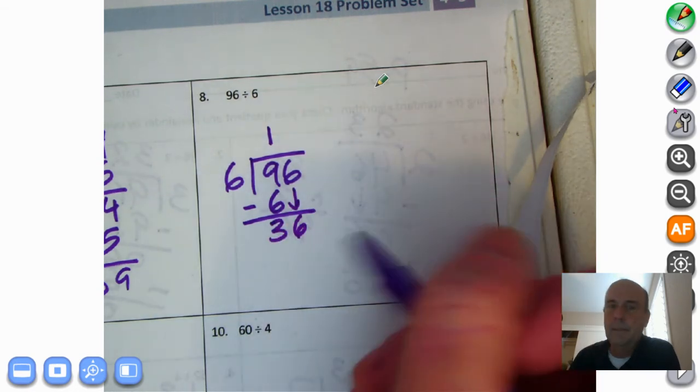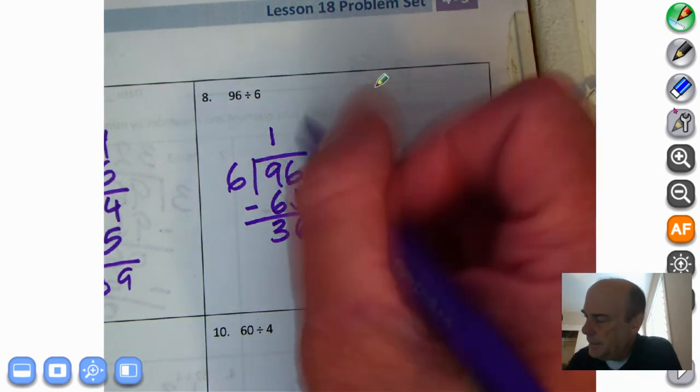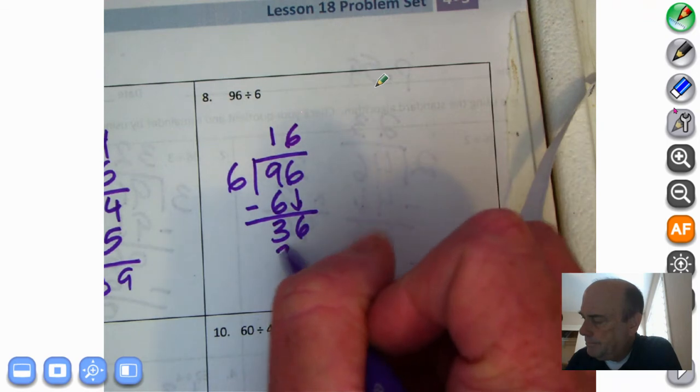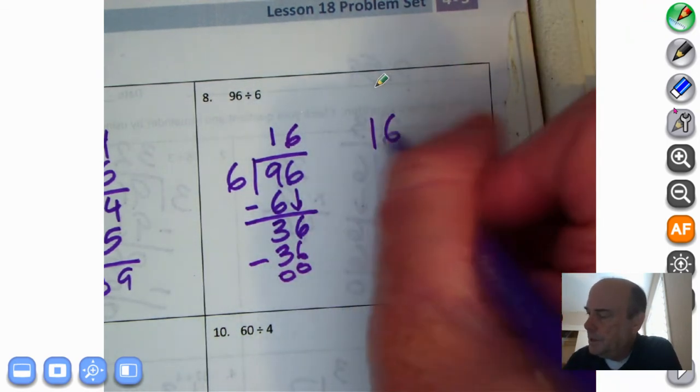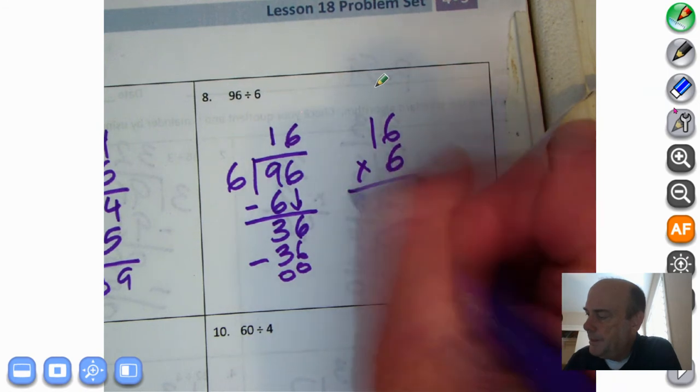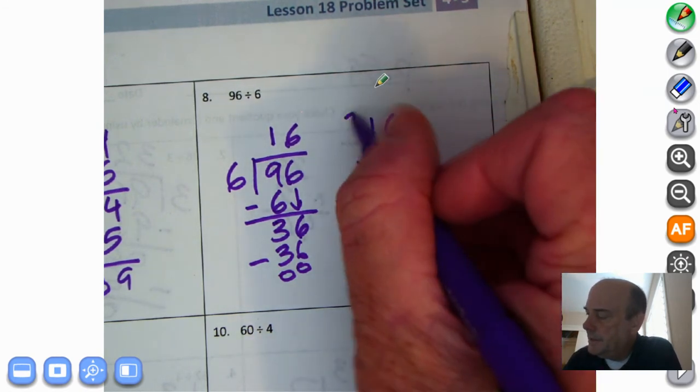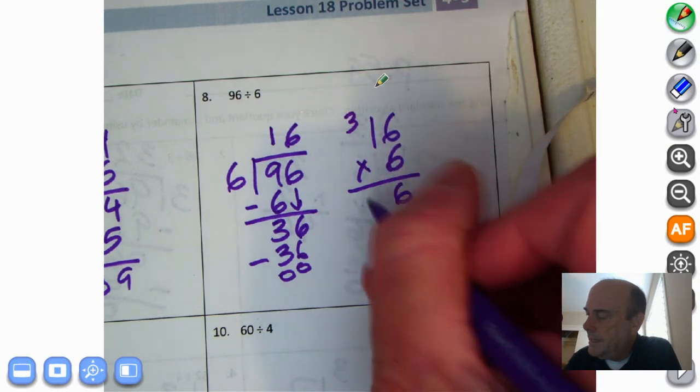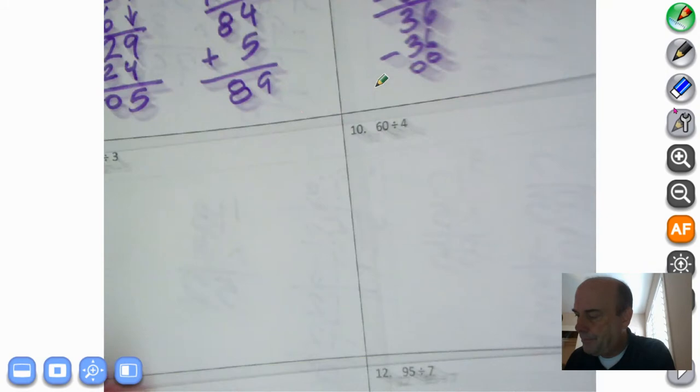Oh, look at this. 6 times what is 36? 6 times 5 is 30. 6 times 6 is 36. Are we correct? Let's take our quotient and multiply it with our divisor. 6 times 6 is 36. 10 times 6, 60 will be 80, 90. And we are absolutely correct. Moving right along.